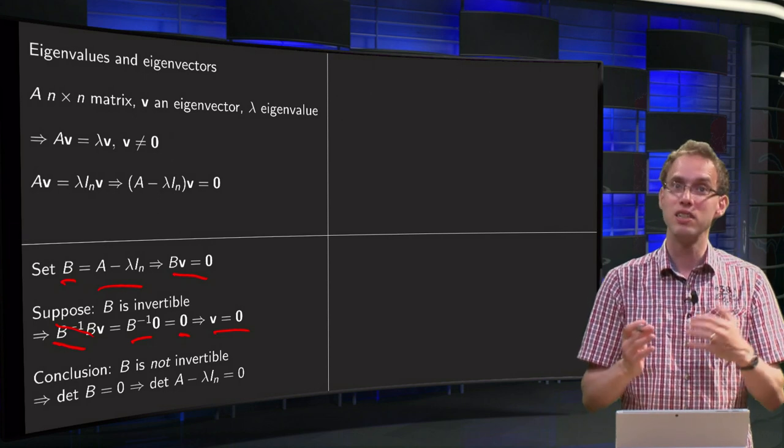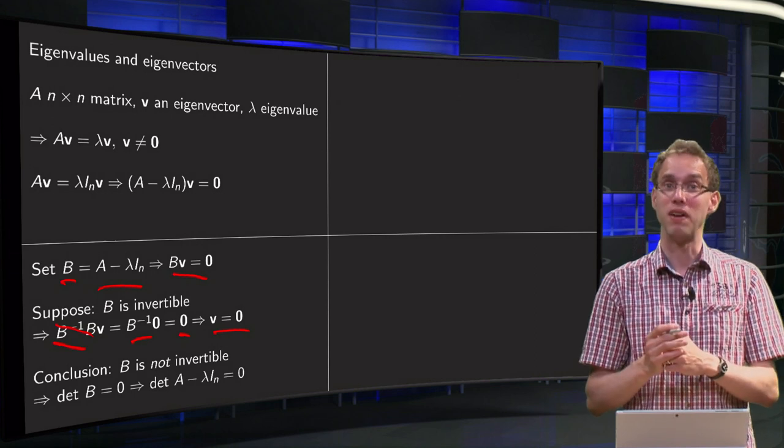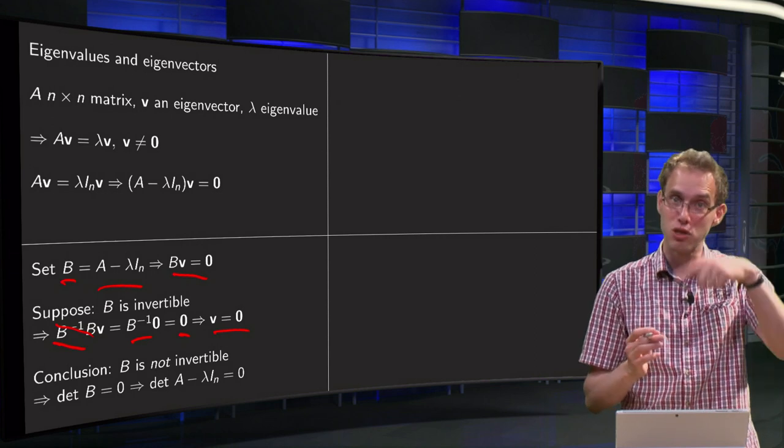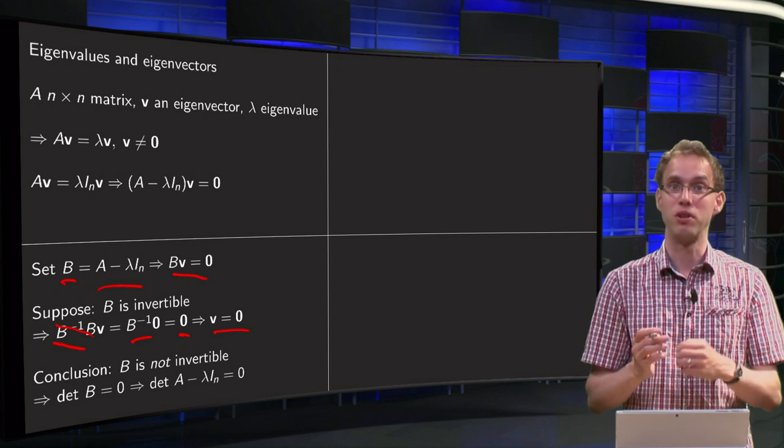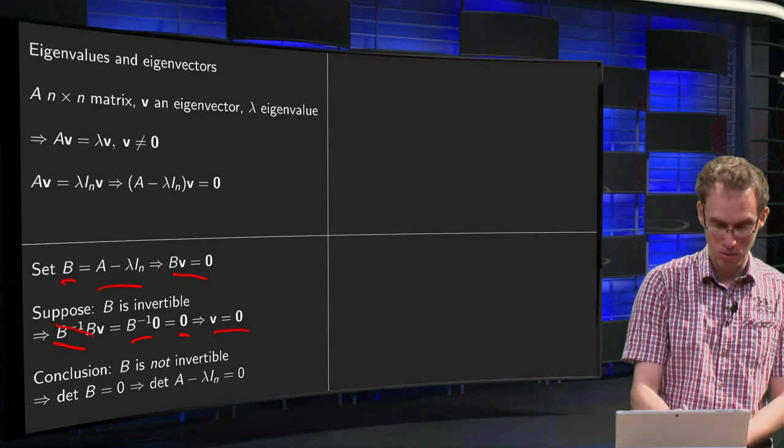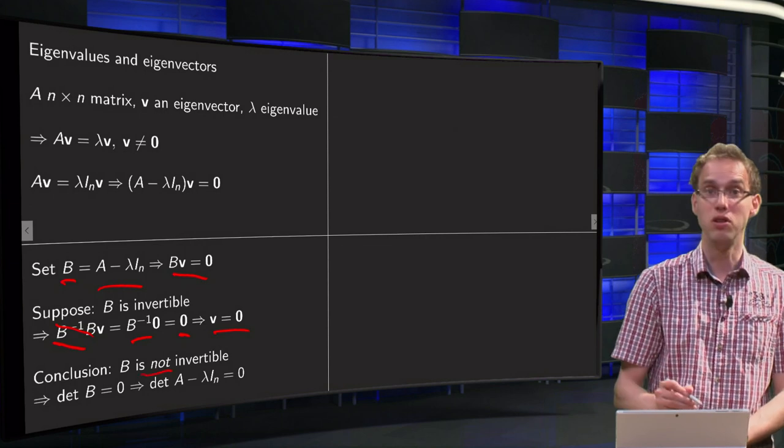So that means that our assumption B is invertible is in fact incorrect, because that leads to V equals zero vector only. The conclusion is that B is not invertible.